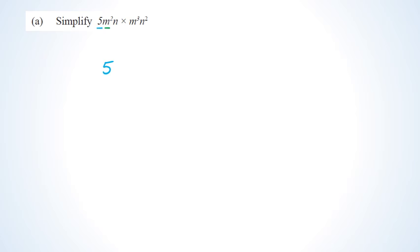Next, we look at m, m squared, and m cubed. This could be written as m to the power of 5. And finally, we look at n and n squared. Remember that n has a little 1 attached to it — that's why we don't write n to the power of 1. So n to the power of 1 times n to the power of 2 is n to the power of 3.